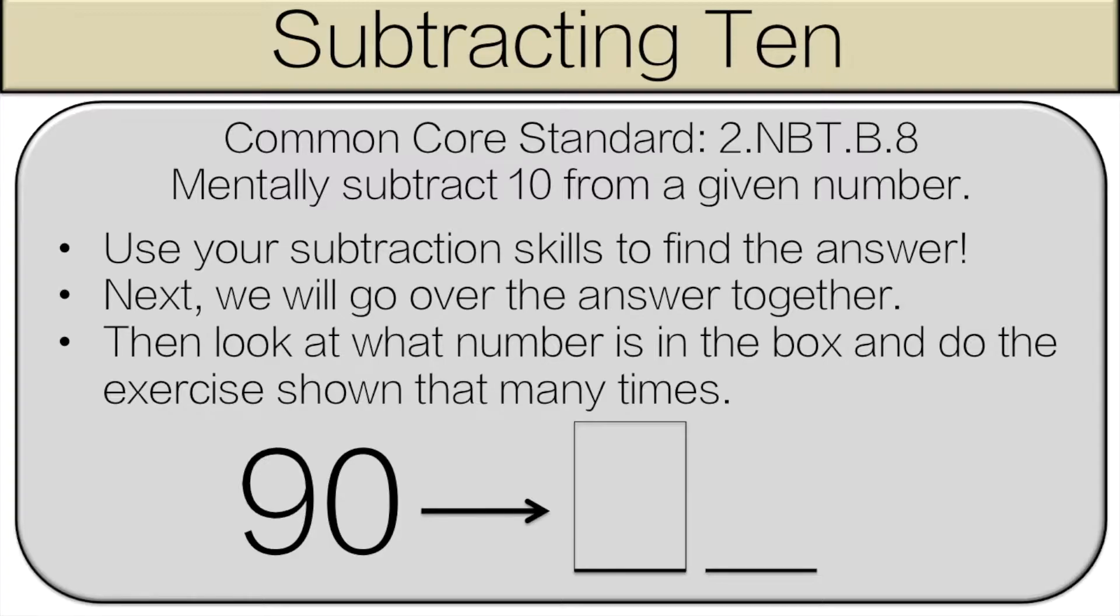So we have the number 90. What is 10 less than 90? 80. We're not going to do the exercise 80 times. We look at what number is in the box, which is 8. So we're going to do the exercise shown 8 times. That's how it works. Let's get started.